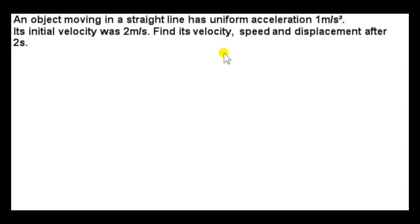An object moving in a straight line has uniform acceleration 1 m per second squared. Its initial velocity was 2 m per second. Find its velocity, speed, and displacement after 2 seconds.